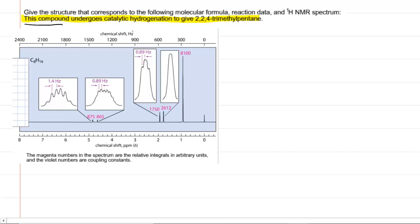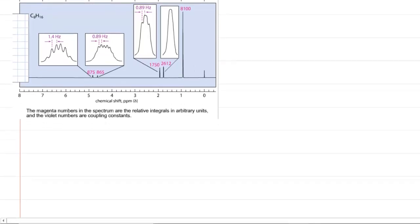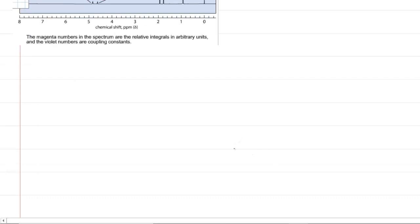We can see that our unknown compound undergoes catalytic hydrogenation to yield 2,2,4-trimethylpentane. Let's draw 2,2,4-trimethylpentane. So pentane means 5 carbons, 2, 3, 4, 5. At carbon 2 we had a pair of methyl groups and at carbon 4 we had a single methyl group. And this is the result of catalytic hydrogenation.